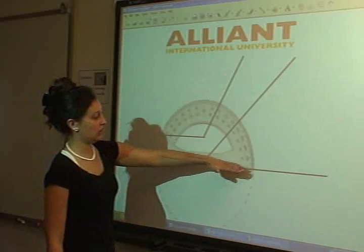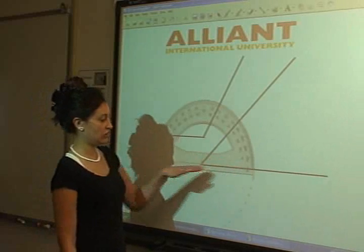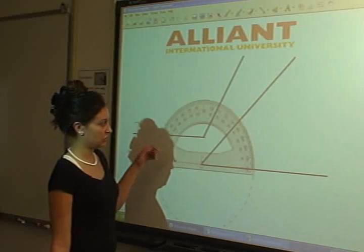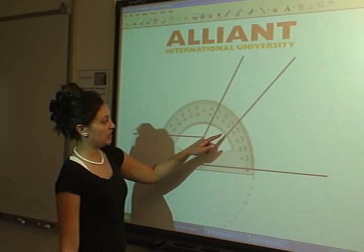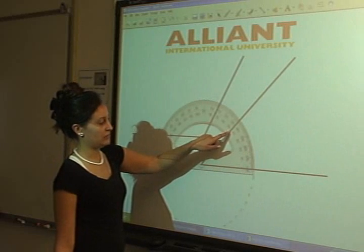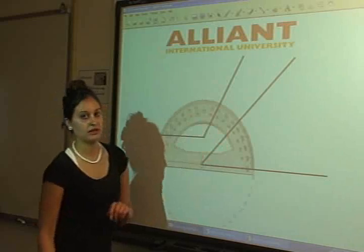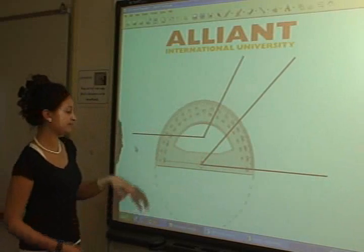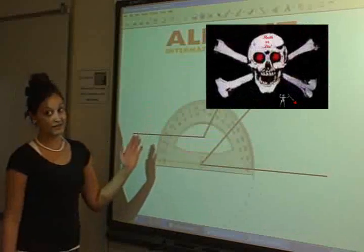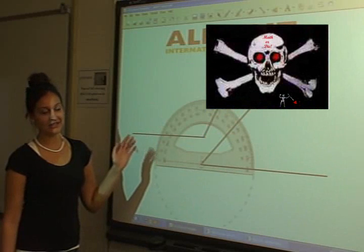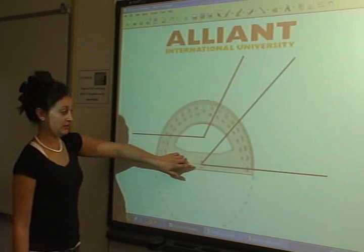So then we're going to go from this side from the 180 degree line, which is also a straight line. We're going to see where it measures and that would be about 45 degrees. So we know that that's a 45 degree angle. And since it's less than 90 degrees, we know it's an acute angle.